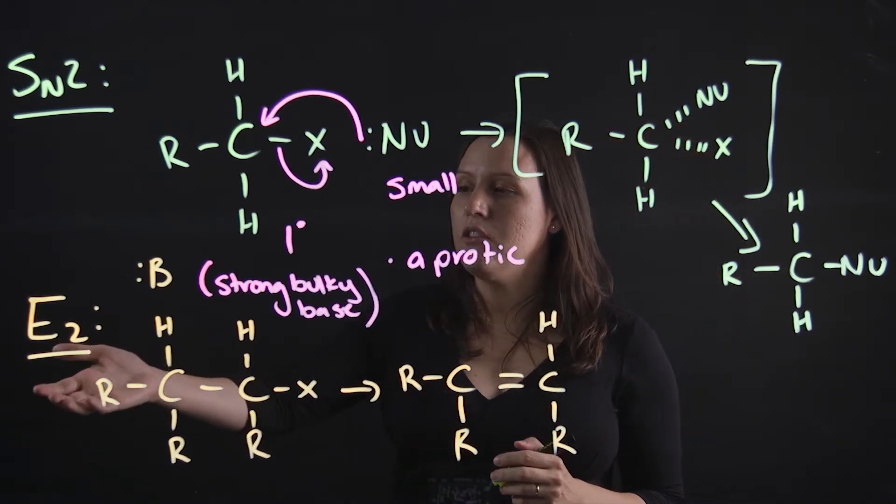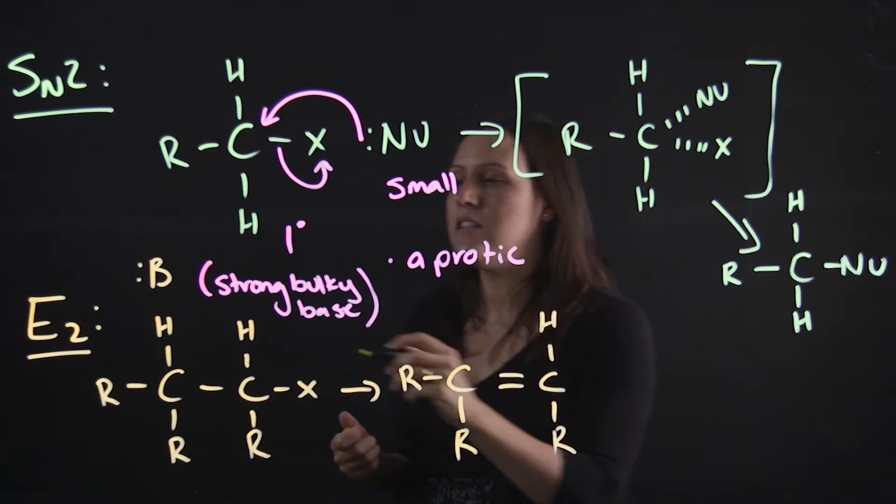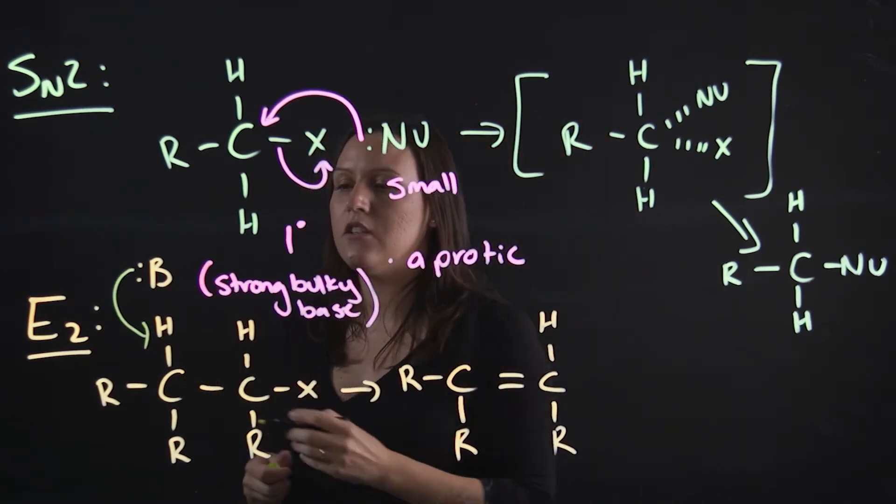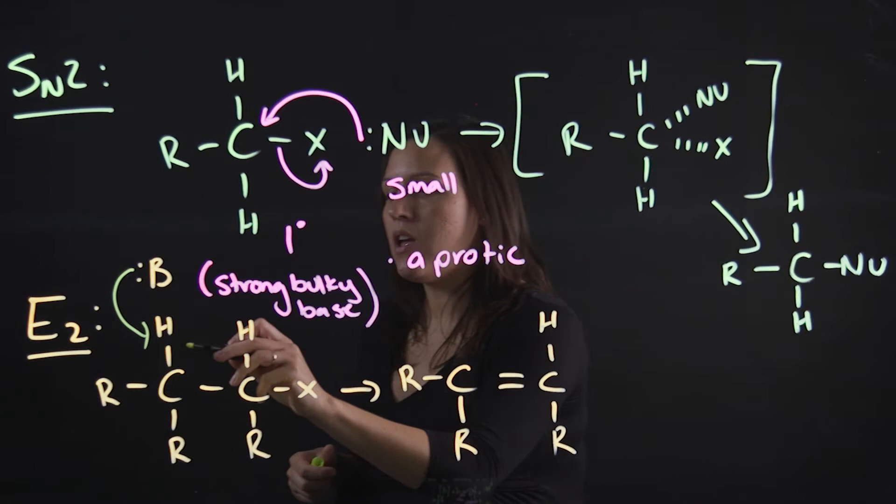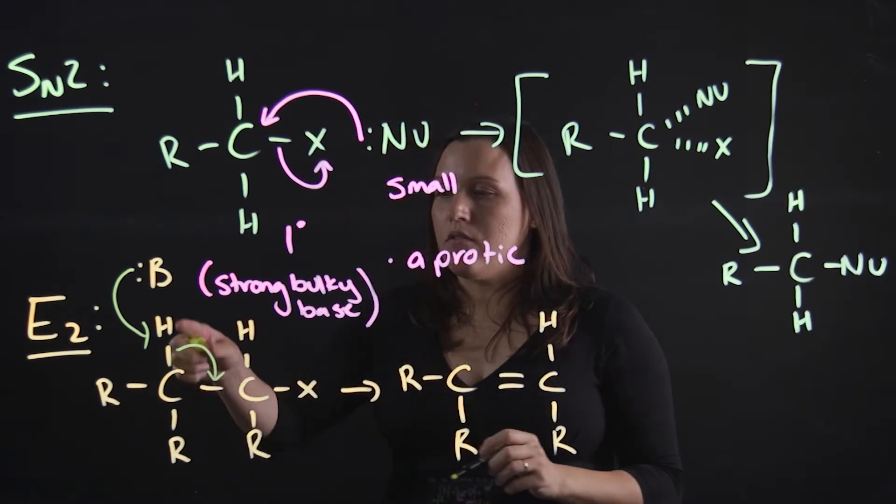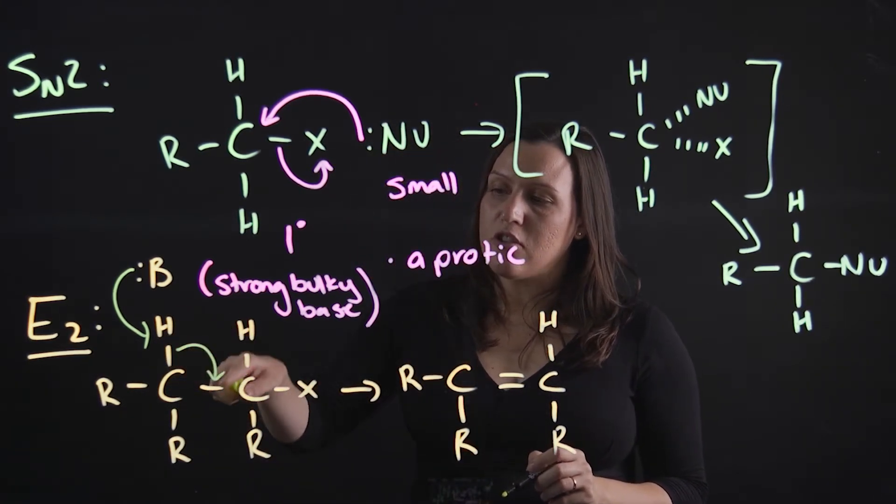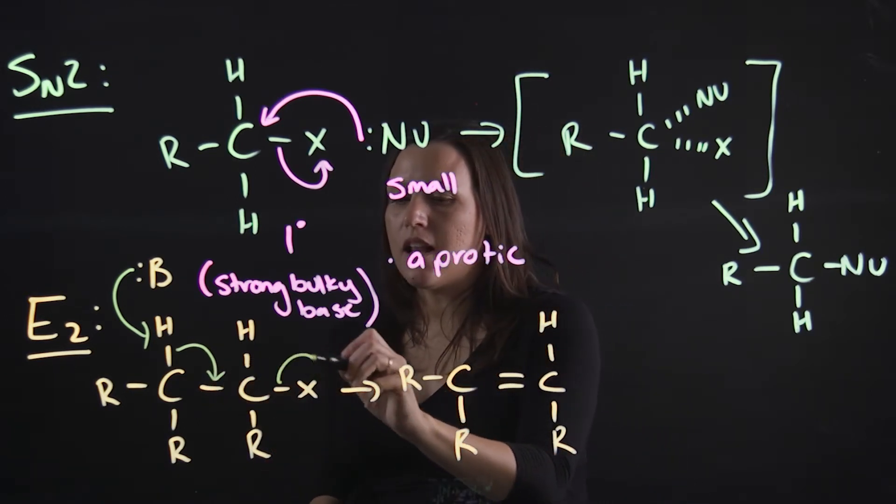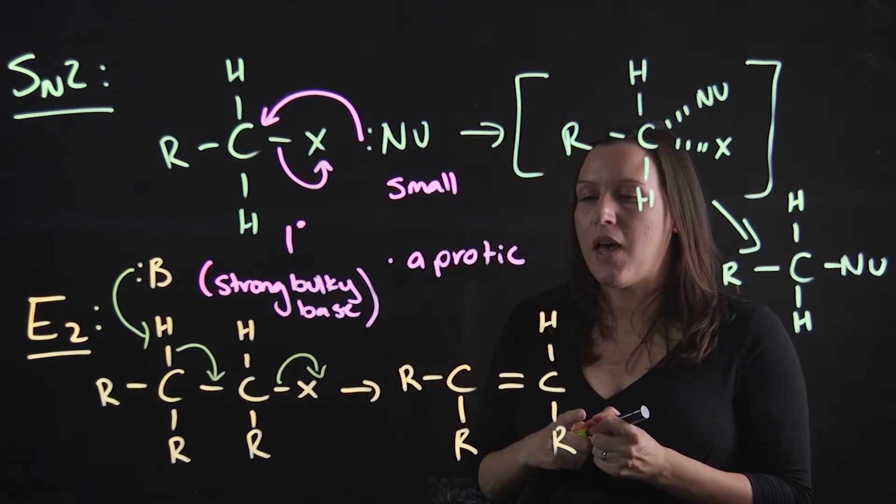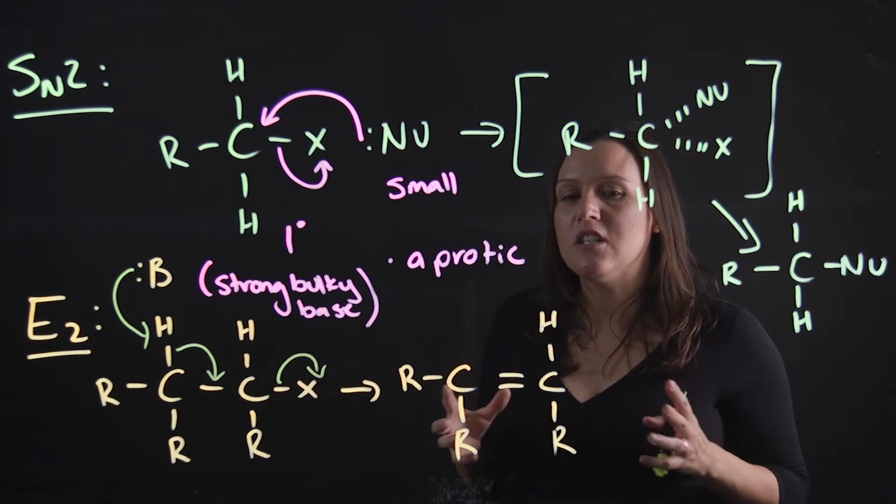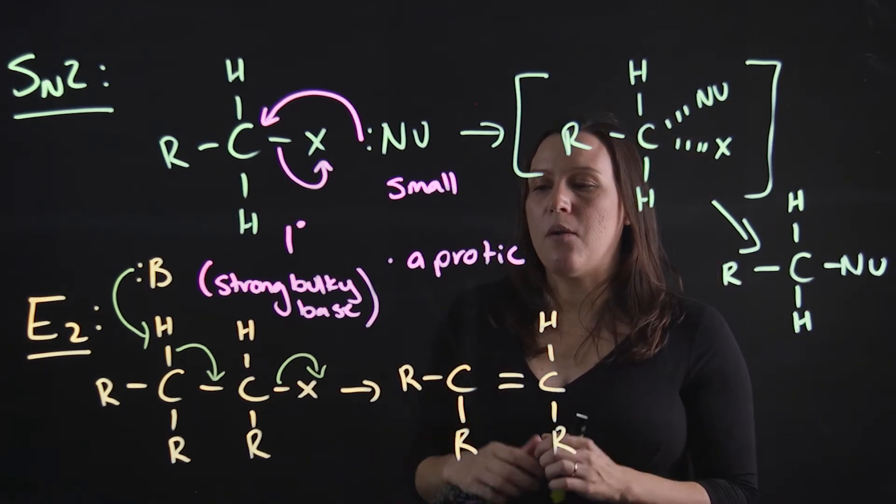Comparing that to our E2, our E2 again needs to have that strong bulky base to deprotonate, and then we have the bonding electrons to that hydrogen going in and making that double bond, and our leaving group coming out at the same time. So it's got that transition state again, and then we get our product there.